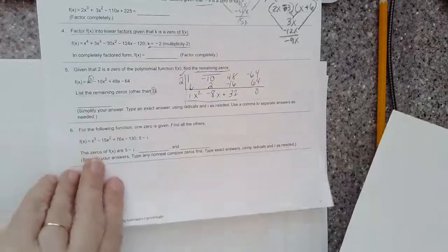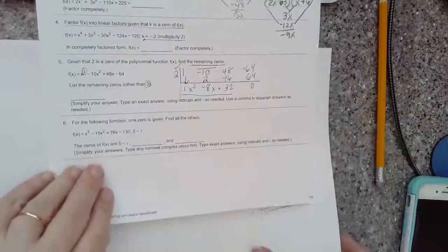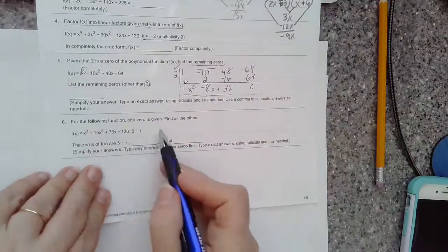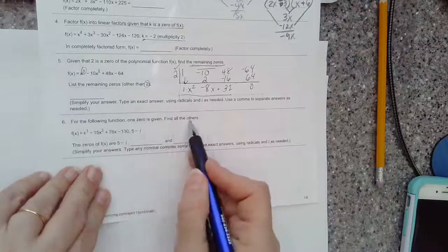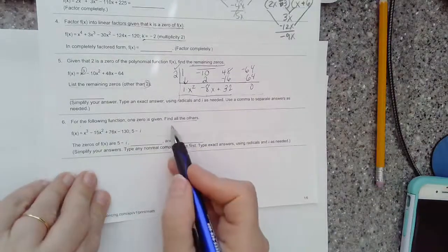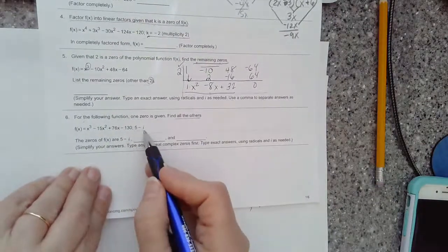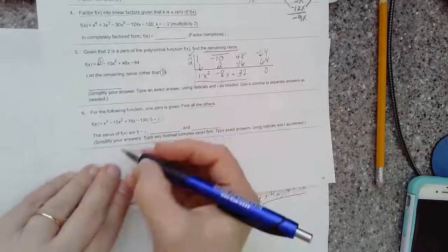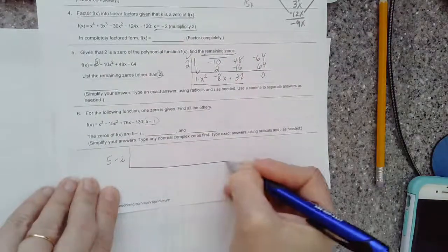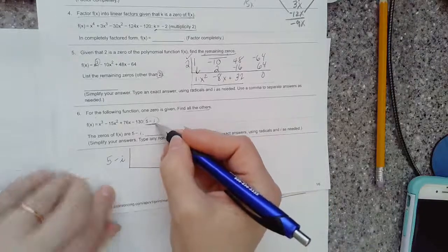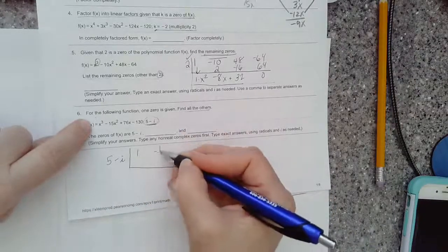Moving on to number 6, find the others. Again, that's the question, but it's going to have a little different twist. In this case, we are dividing by an imaginary number, 5 minus i, and whatever it tells me the zero is, that's how I get started and start breaking the polynomial down.